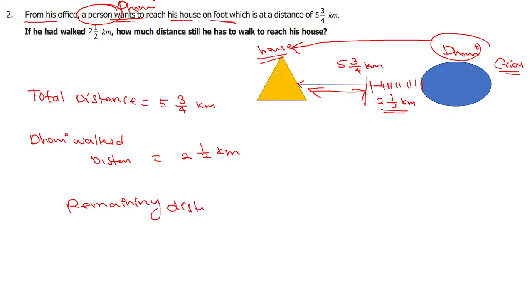Distance minus the walked distance. So 23 by 4 minus 5 by 2. Taking LCM which is equal to 4, so the first one stays, the second one is 10 by 4. So minus 23 minus 10 equals 13 by 4.